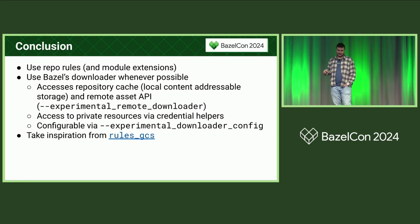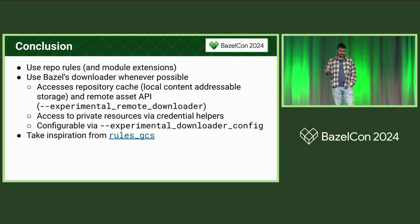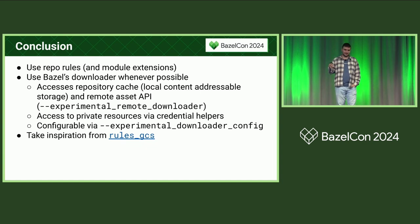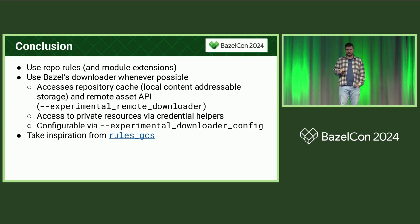To summarize: you should always use repository rules and module extensions as much as possible. Use the Bazel downloader — it has nice features. Also take inspiration from Rules GCS, something that Tweag recently open-sourced together with IMAX. They needed to access Google Cloud Storage and this is what came out of it — it uses all of the ideas from this talk. Thank you.